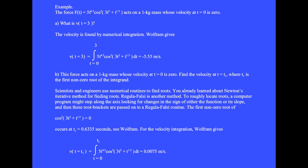Question A. What is the velocity at t equals 3? The velocity is found by numerical integration. V at t equals 3 is found by integrating from t equals 0 to 3 dt. And Wolfram gives minus 5.55 meters per second.